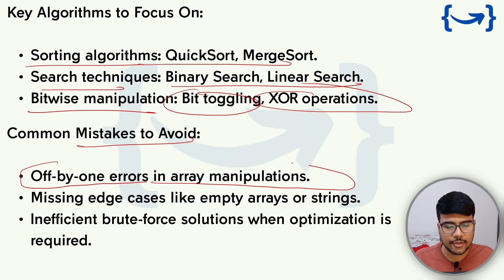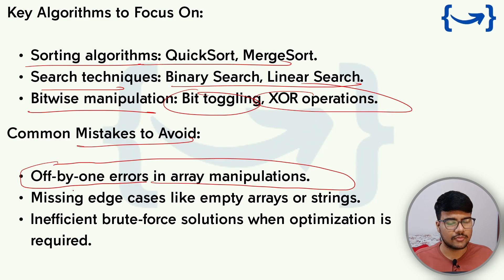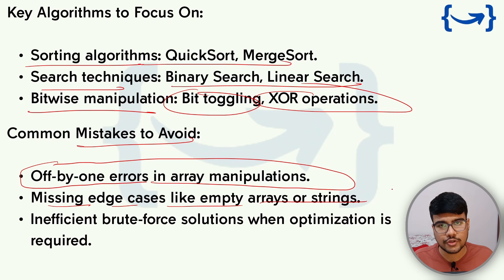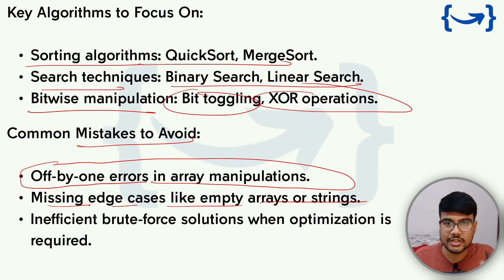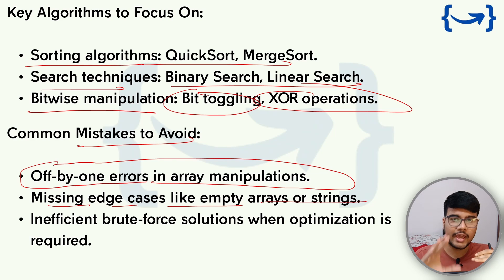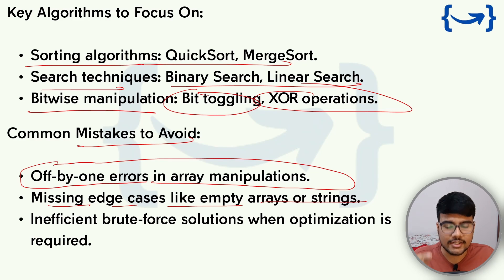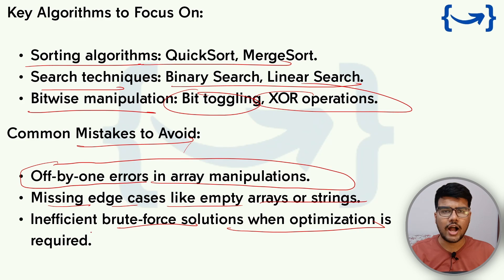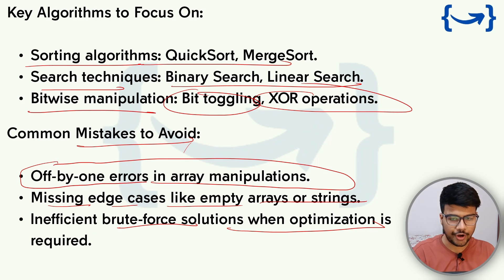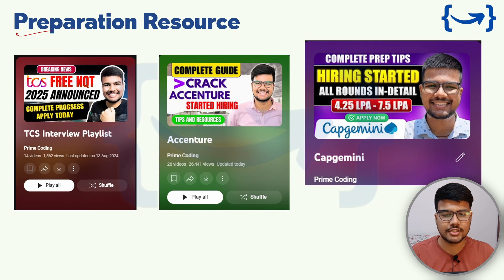Common mistakes to avoid: off-by-one errors in array manipulation, missing edge cases like empty arrays or strings — most people start coding without reading the constraints, but checking constraints gives you an idea of boundary and corner cases. Also avoid inefficient brute-force solutions when optimization is required.